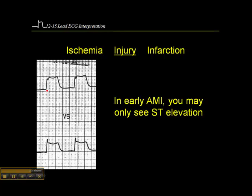You'll notice that there are no Q waves. We have a baseline here and the J point here, so we have really marked ST elevation with no Q waves. We have baseline and an elevated J point here, so we have an injury pattern without evidence of necrosis and without symmetrically inverted T waves. This is typical of an acute STEMI within the first hour to two hours or so, and this is quite significant.